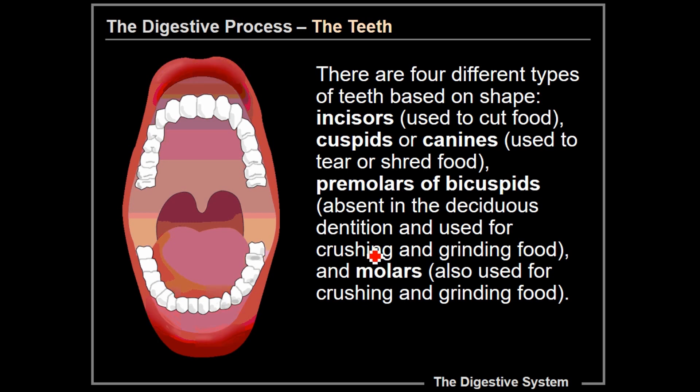There are four different kinds of teeth that you find in your mouth. We have incisors up front, which we use to cut food. Our cuspids or canines are used to tear or shred food — your meat eaters have prominent cuspids and canines. Premolars or bicuspids are absent in deciduous or baby teeth and are used for crushing and grinding food. And then the ones at the very back are called the molars, also used for crushing and grinding food, and those are probably used the most.